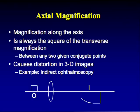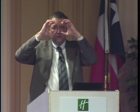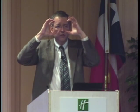Angular magnification applies when viewing objects at infinity, where image distance is infinite and image height is undefined. Instead, we compare angles. If the moon takes up one degree of visual field unaided and three degrees through binoculars, those are 3x binoculars — the angular size increased by a factor of three.